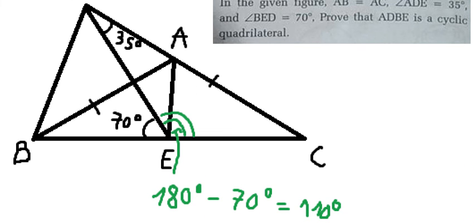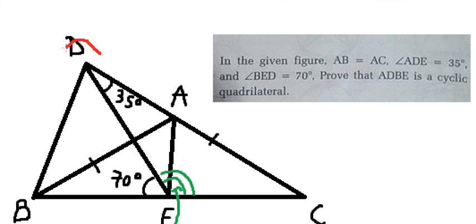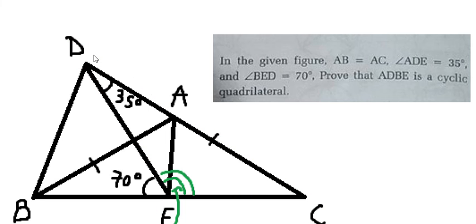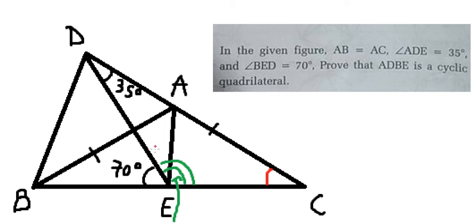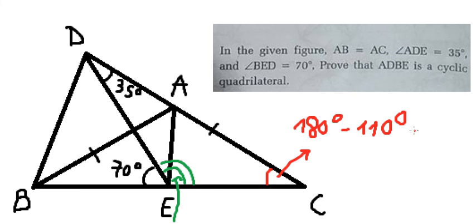Now if we look carefully at triangle DEC, we see that angle D is about 35 degrees and the angle at E is 110 degrees. The sum of three angles in a triangle should be 180 degrees. So we calculate: 180 minus 110 minus 35 degrees, which gives us 35 degrees for the remaining angle.